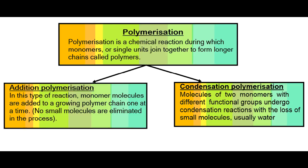Polymerization, by definition, is a chemical reaction during which monomers or single units join together to form longer chains called polymers. So we have simple small chemicals which join together repeatedly to form large molecules.